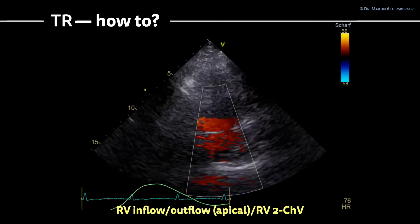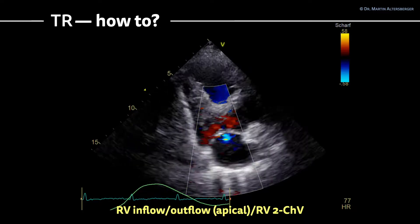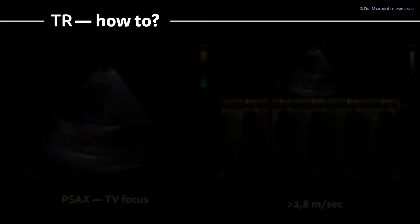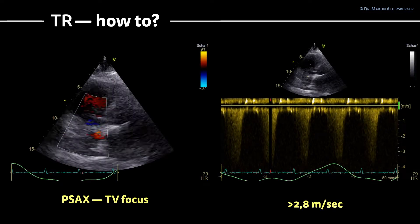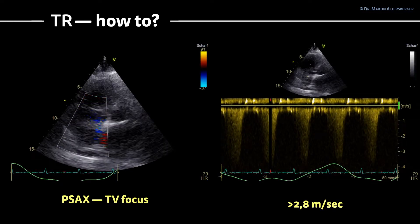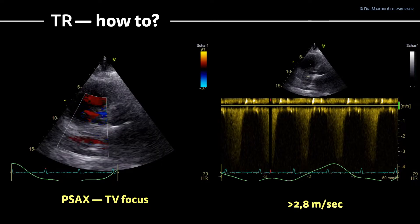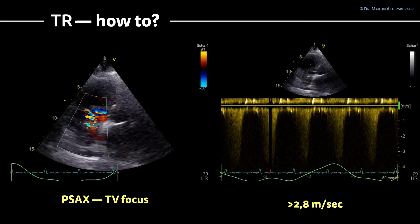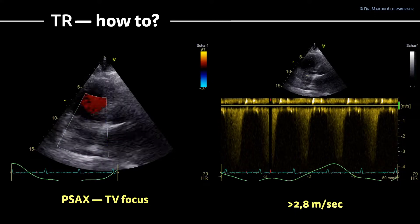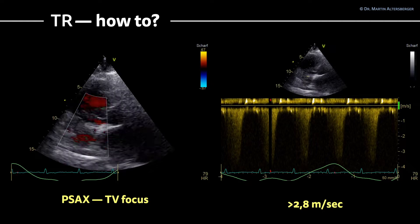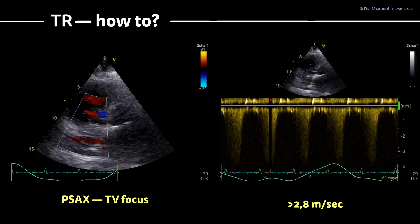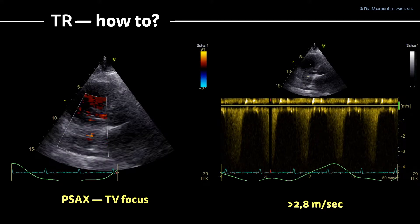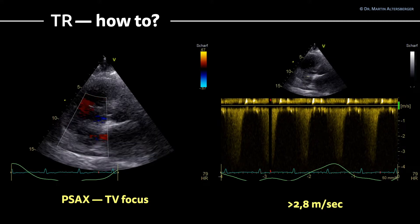Does it really work and can we measure the same velocity every time? The image quality has to be sufficient. Another possibility is the parasternal short axis view with a tricuspid valve focus. You go to the parasternal short axis view, focus on the tricuspid valve, and use continuous wave Doppler. The signal here is not optimal, but we can see it is far exceeding 2.8 m/s — it is in the range of 3.5 to 4 meters per second.